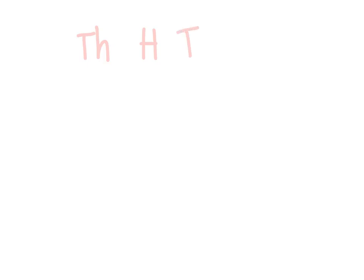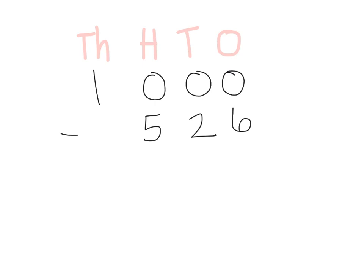I'm going to quickly label TH for thousands, H for hundreds, T for tens, O for ones. Let's do another one. We are working in the thousands place, so we're just going to write 1,000 here, and we're going to take away 526. Make sure when you are writing these numbers that you are lining them up in the correct place. Your ones need to line up in the ones place, your tens in the tens place, and your hundreds in the hundreds place. If you write your problem down wrong before you solve it, you will get the wrong answer every single time, so please make sure you are lining up the place values correctly.